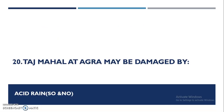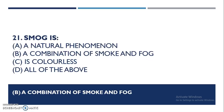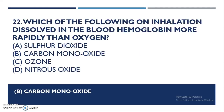The Taj Mahal in Agra may be damaged by acid rain — specifically sulfur dioxide and nitrogen oxide, which we have discussed before. Smog is a combination of fog and smoke. On inhalation, carbon monoxide dissolves in the blood hemoglobin more rapidly than oxygen.